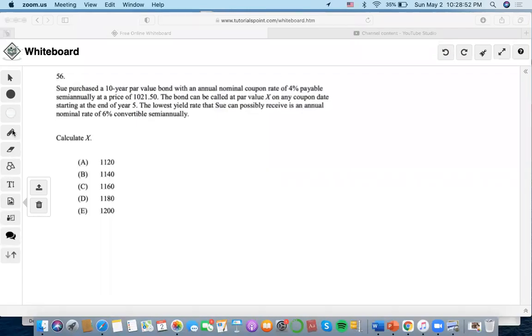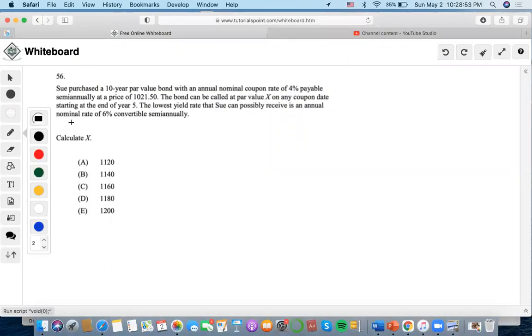Okay, so for this one: suppose it's a 10-year par value bond with an annual nominal coupon rate of 4% semi-annual at a price of 1021.50.